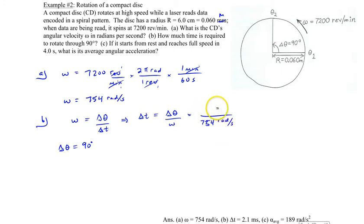To convert degrees to radians, we know that π radians equals 180 degrees. So 90 degrees is π divided by 2 radians. Putting π/2 radians at the top and 754 radians per second at the bottom into our calculator, we get 0.00208 seconds, or 2.08 milliseconds.